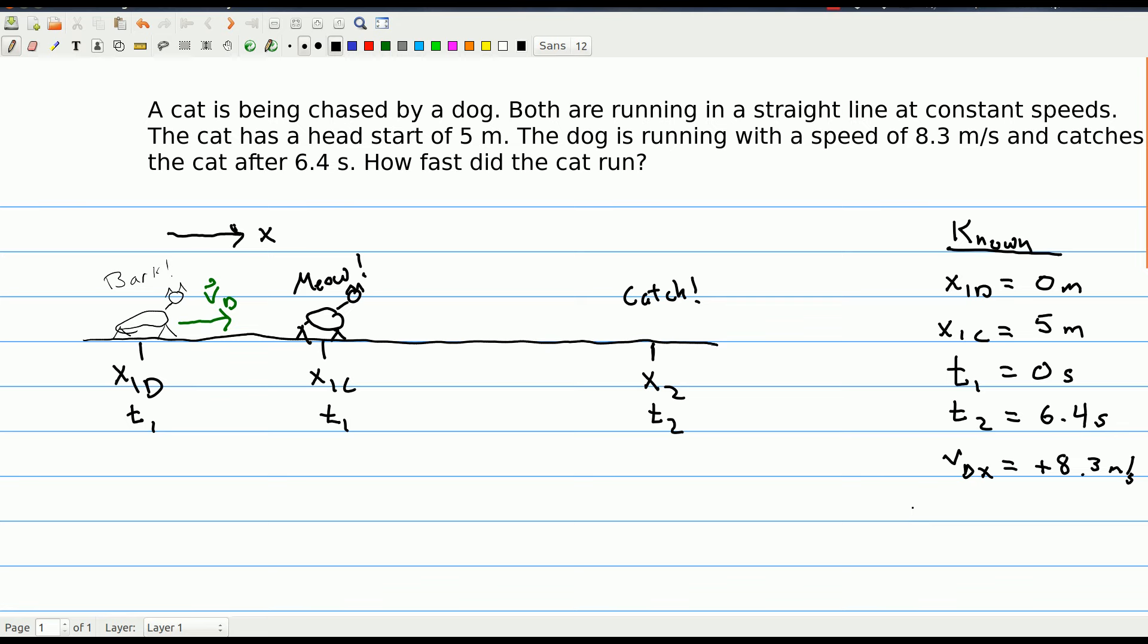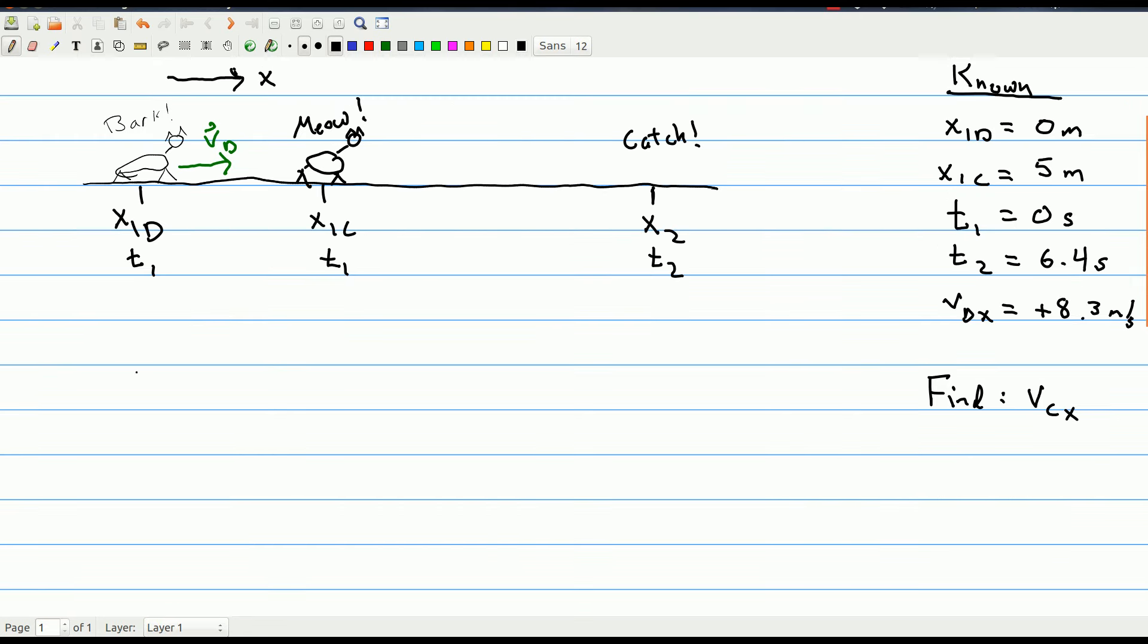Okay? We are told that we've got constant speeds. So we also know we have no acceleration for either the dog or the cat. So that lets us go ahead and use our equation for average velocity. So let's just try and find it directly. This might be the first thing we try. So I'm looking for the velocity of the cat in the x direction. Well, the cat ends up at position 2, starts at position 1, and it did that in time t2 minus t1.